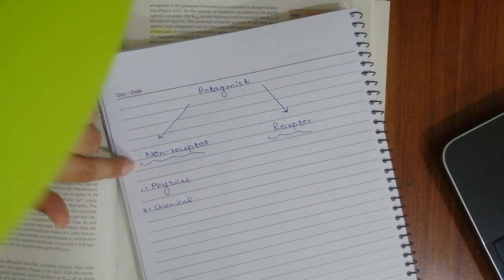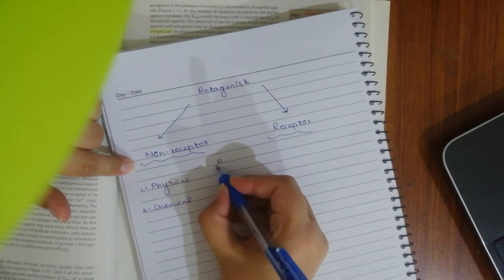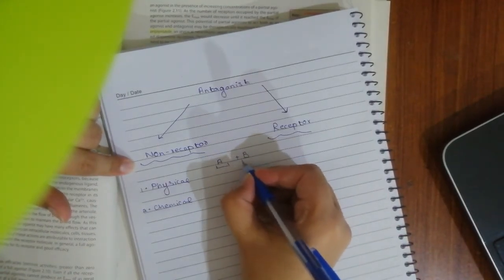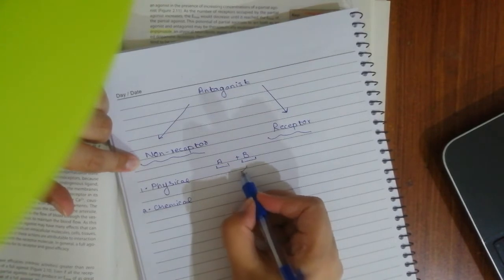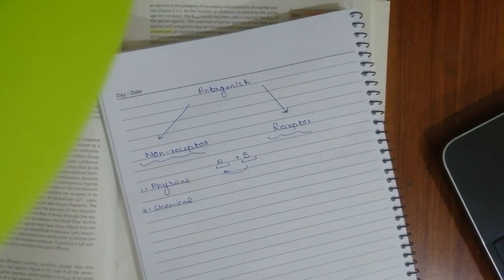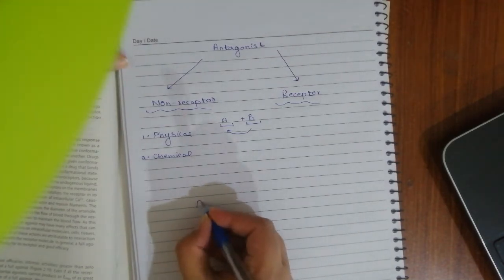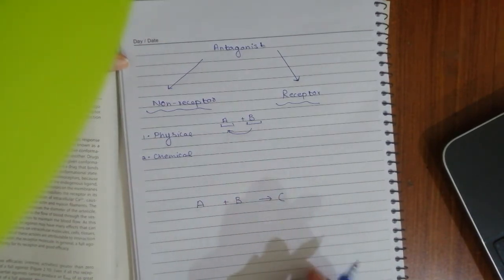Under non-receptor antagonism, we can further classify into physical, chemical, and physiological types. In physical antagonism, you have given an agonist drug A and drug B interferes, not through a receptor, but by a physical process. Reactions can be divided into physical and chemical processes — in a chemical reaction, two substances react to form a completely different third substance.